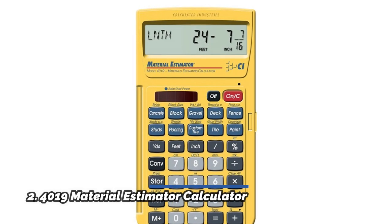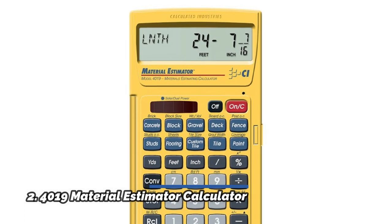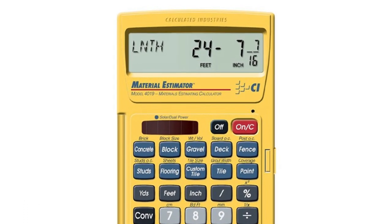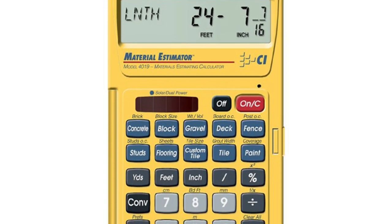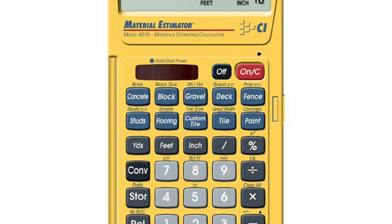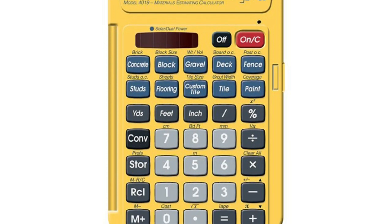Number 2, 4019 Material Estimator Calculator. Enter dimensions directly in feet, inches, fractions, yards, and meters including square and cubic formats, and then instantly convert to any standard building unit you prefer for consistent solutions that make sense to you.